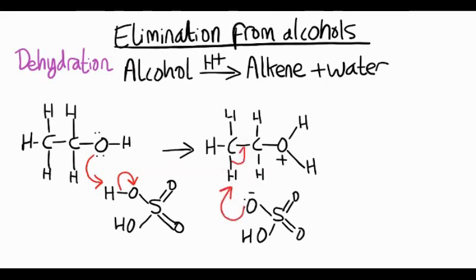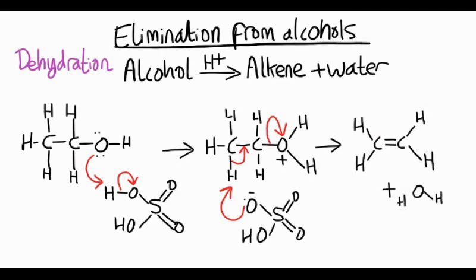The oxygen attacks a hydrogen next to the OH group. The electrons make a carbon-carbon double bond, and we kick out the water molecule. Because the electrons from the CH bond went between the carbon and carbon, we've now got two bonds, so it's ethene. The water molecule is neutral because both electrons went towards that positively charged oxygen.